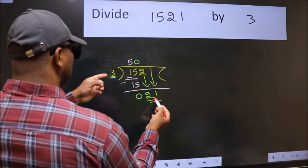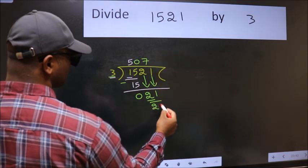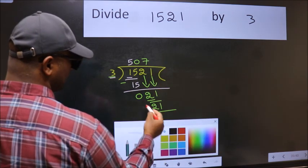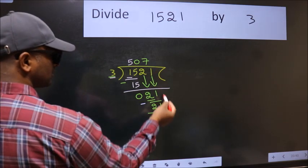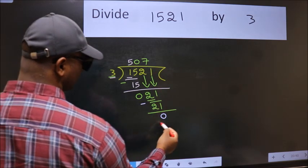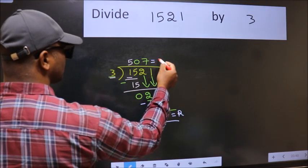When do we get 21 in 3 table? 3 times 7 is 21. Now we subtract. We get 0. No more numbers to bring it down, so we stop here. This is our remainder, and this is our quotient.